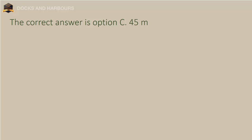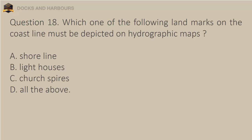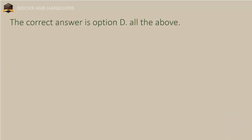Question 18. Which one of the following landmarks on the coastline must be depicted on hydrographic maps? A. Shoreline, B. Lighthouses, C. Church spires, D. All the above. The correct answer is option D: All the above.